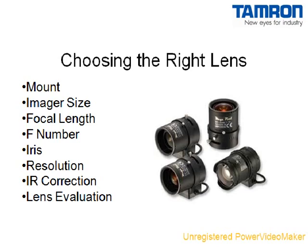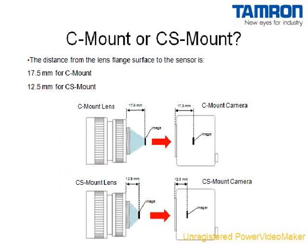Once you have decided on a camera, you will need to decide on a lens to go with it. This section of the seminar will take you step by step through the various considerations in choosing a lens and will help you find the lens that is right for your application. The mount refers to the mechanical attachment between the camera and the lens. There are two common types of mounts for box cameras: C-mount and CS-mount. The difference between the two lies in the distance from the contact point of the camera and the lens to the camera imager. This distance is 17.5mm for C-mount and 12.5mm for CS-mount.